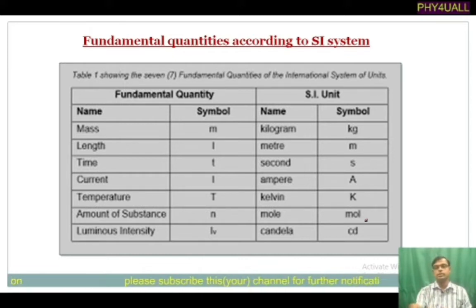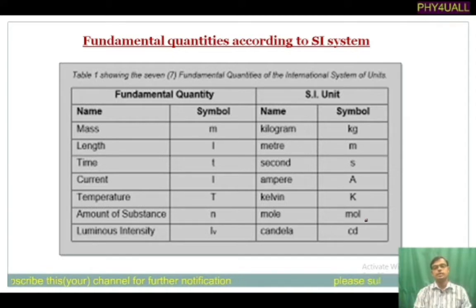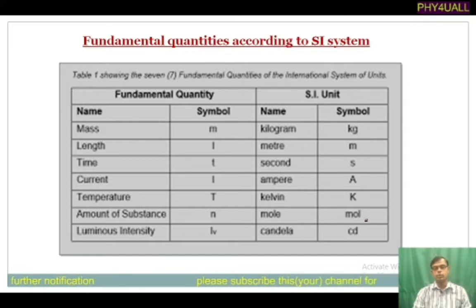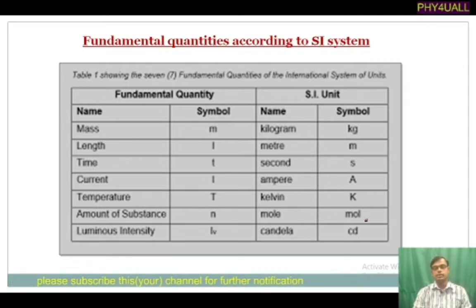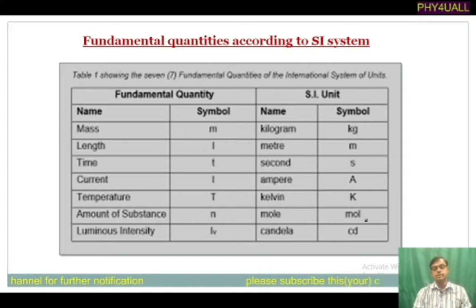The important ones are the SI unit names and symbols. Mass: kilogram, symbol kg. Length: meter, symbol m. Time: second, symbol s. Electric current: ampere, symbol A (capital). Temperature: kelvin, symbol K (capital). Amount of substance: mole, symbol mol. And luminous intensity (intensity of light): candela, symbol cd.